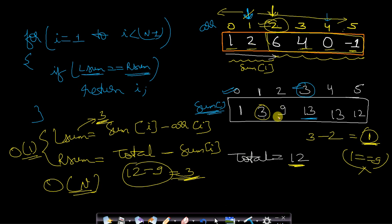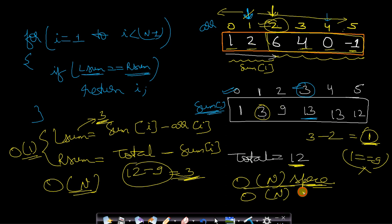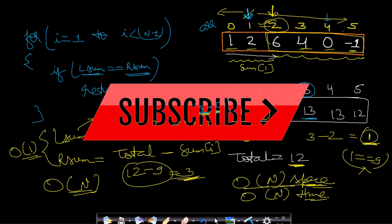The time complexity of this optimized approach is O(n): O(n) for preprocessing the prefix sum array, which requires O(n) extra space, and O(n) for the main iteration — giving O(2n) overall, which is O(n). I hope you are able to understand how to find the equilibrium point in an array. If you have any doubts, please comment below. Like, share, and subscribe to our channel to watch more programming videos. See you in the next video!